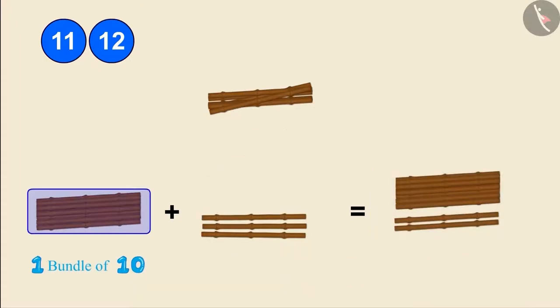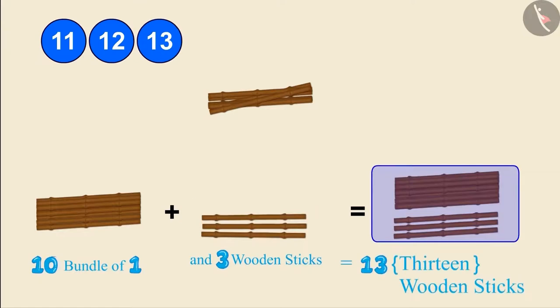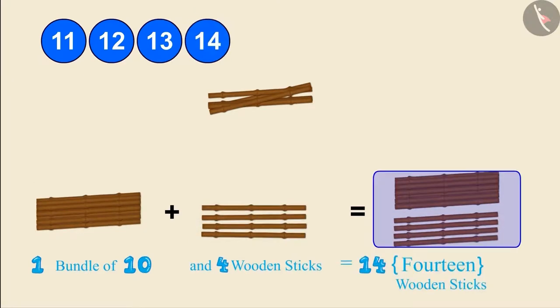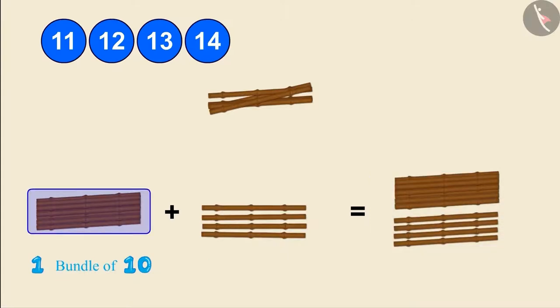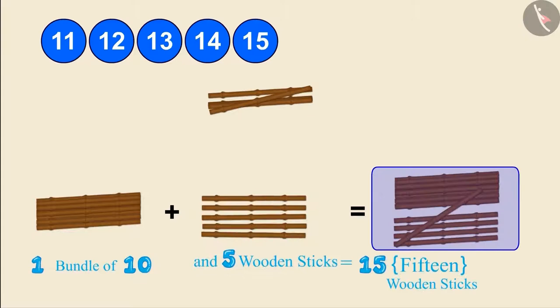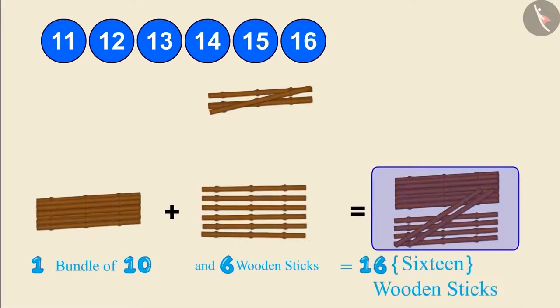One bundle of 10 and 3 wooden sticks make 13 wooden sticks. One bundle of 10 and 4 wooden sticks make 14 wooden sticks. One bundle of 10 and 5 wooden sticks make 15 wooden sticks. One bundle of 10 and 6 wooden sticks make 16 wooden sticks.